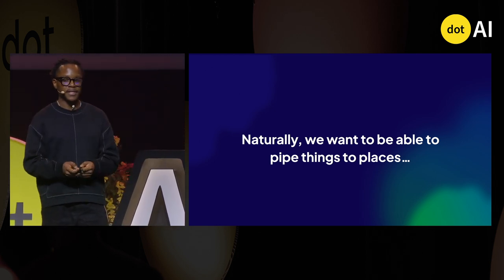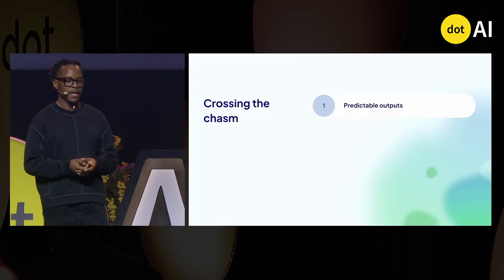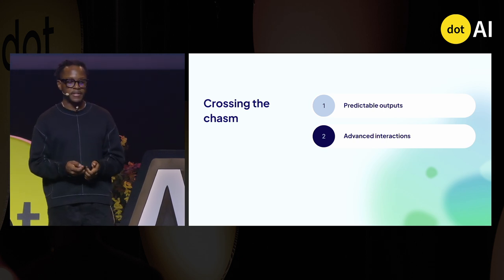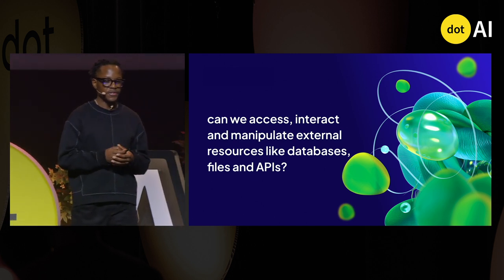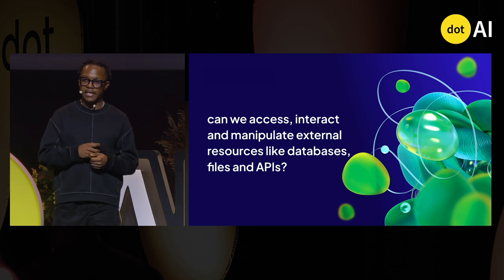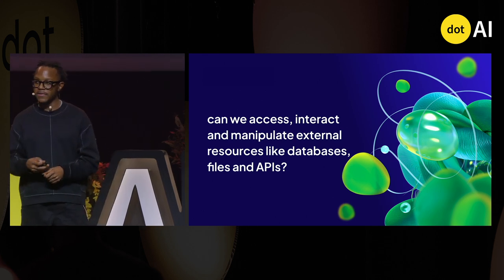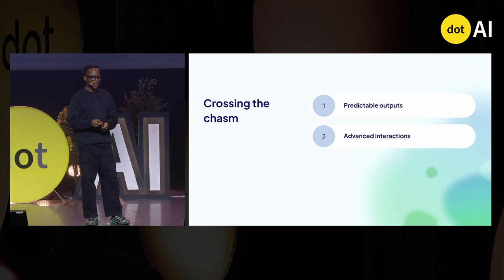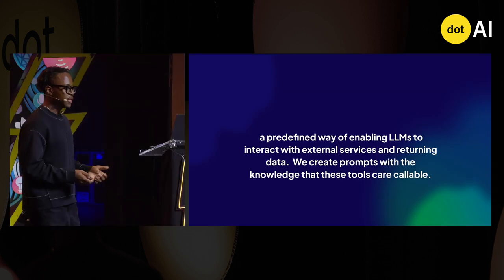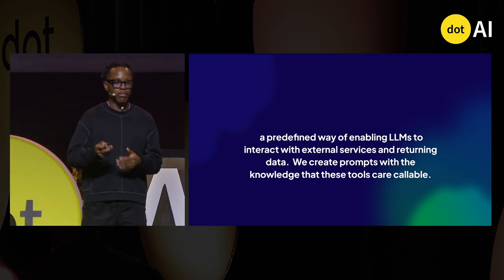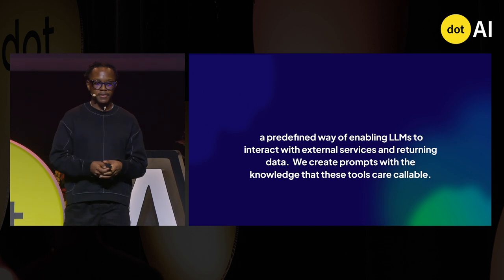We've seen how we can pipe things and what we could use to pipe things. The next question is how do we get advanced interactions with this information. The first thing that comes to mind: can we give these models access to the internet, access to external data, to interact with and manipulate databases or APIs? The first approach you may have seen is tool calling or function calling — it has a lot of names. Essentially, we have a predefined list of tools, functions, and services that we put around our prompt and then let the model leverage and utilize.